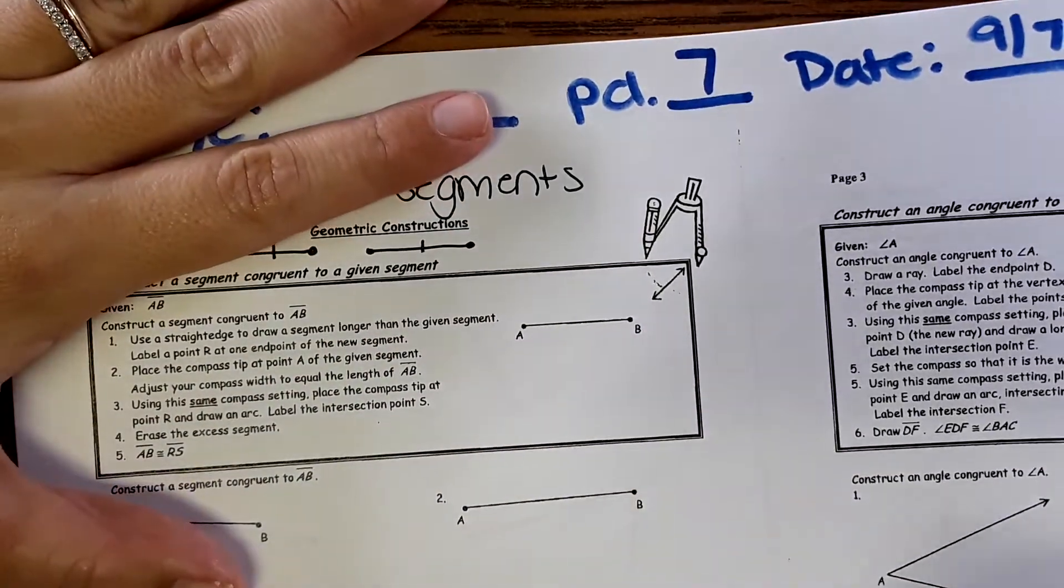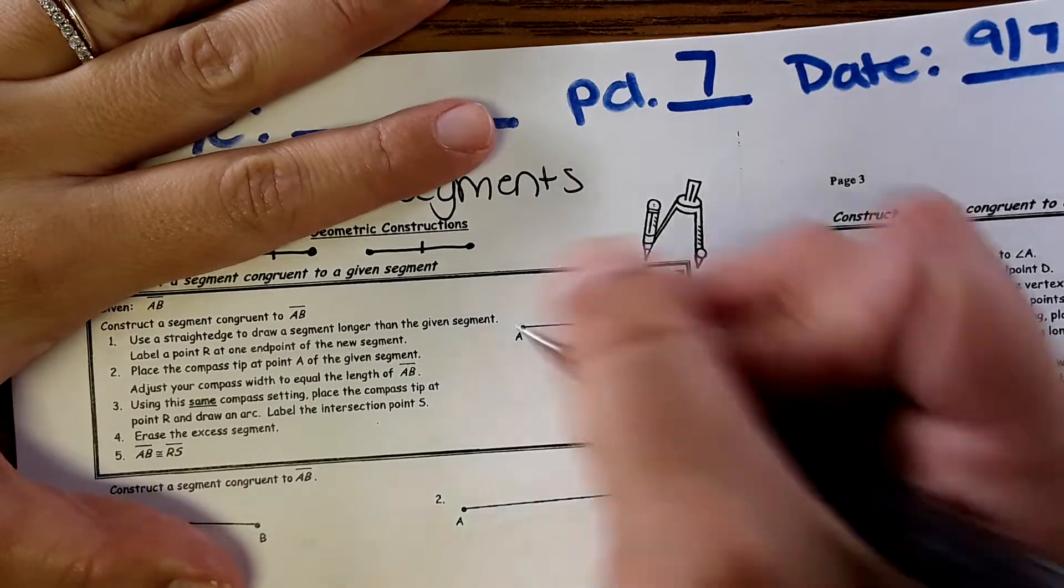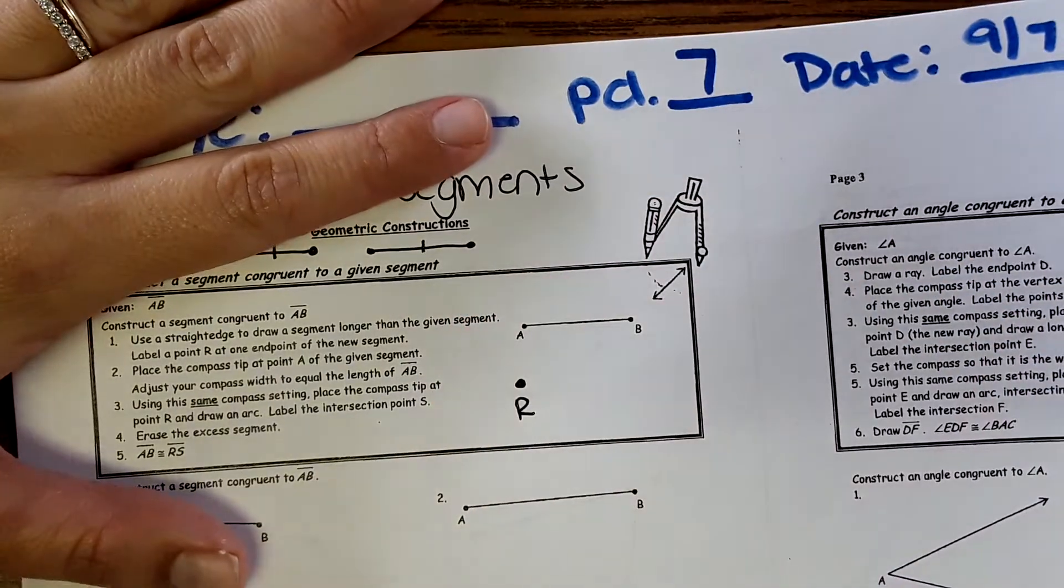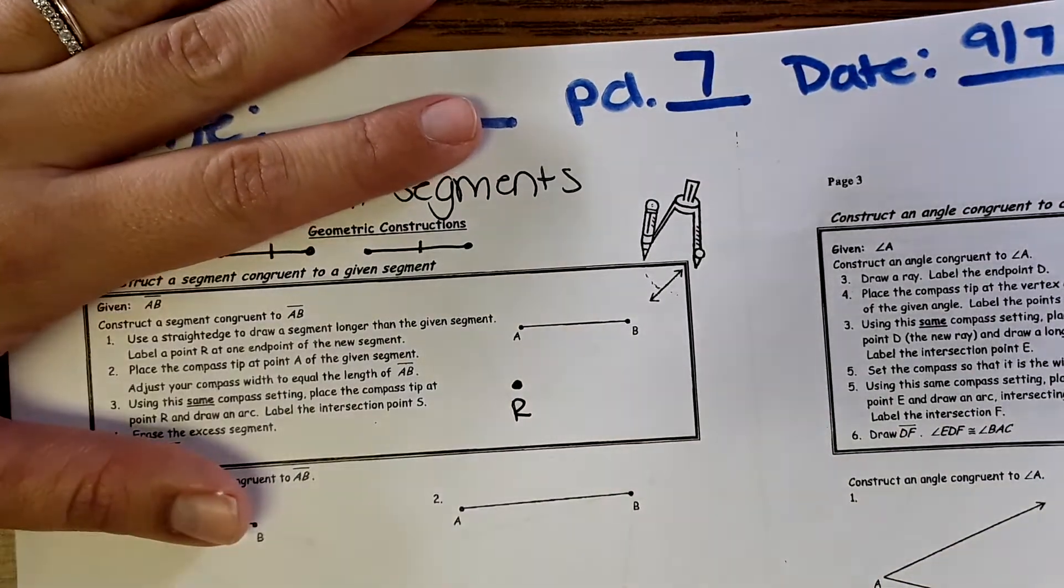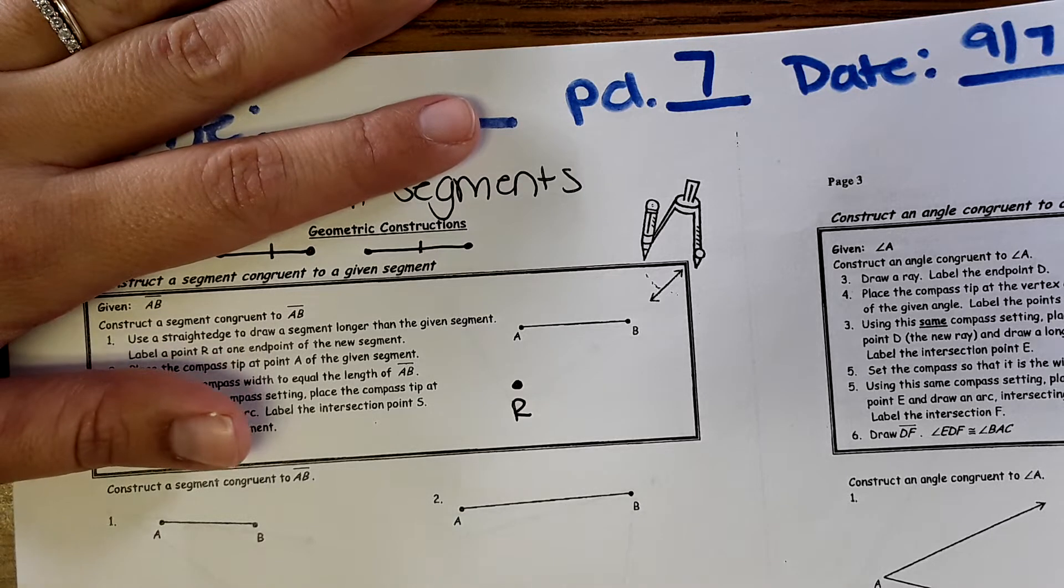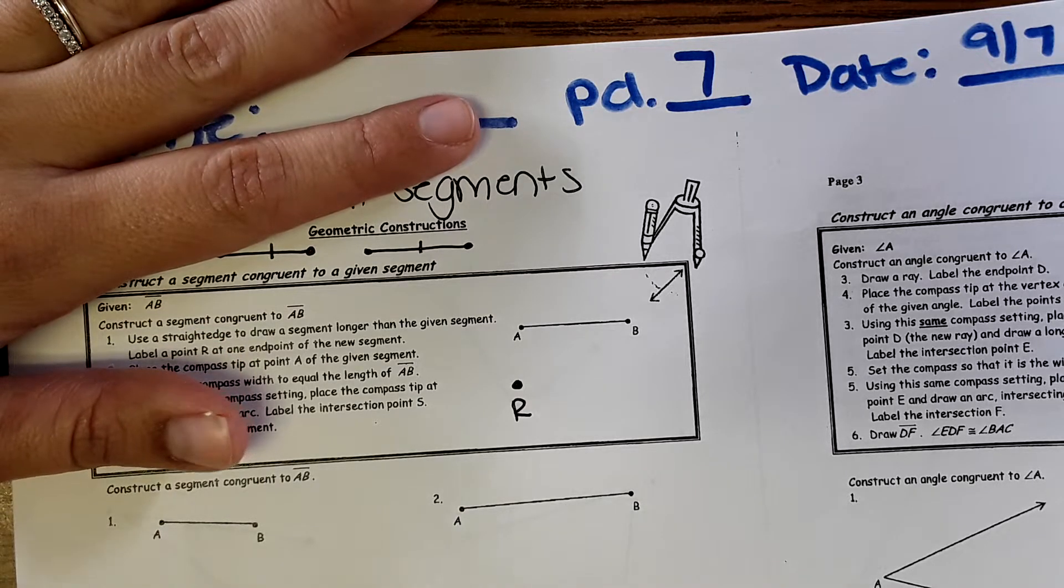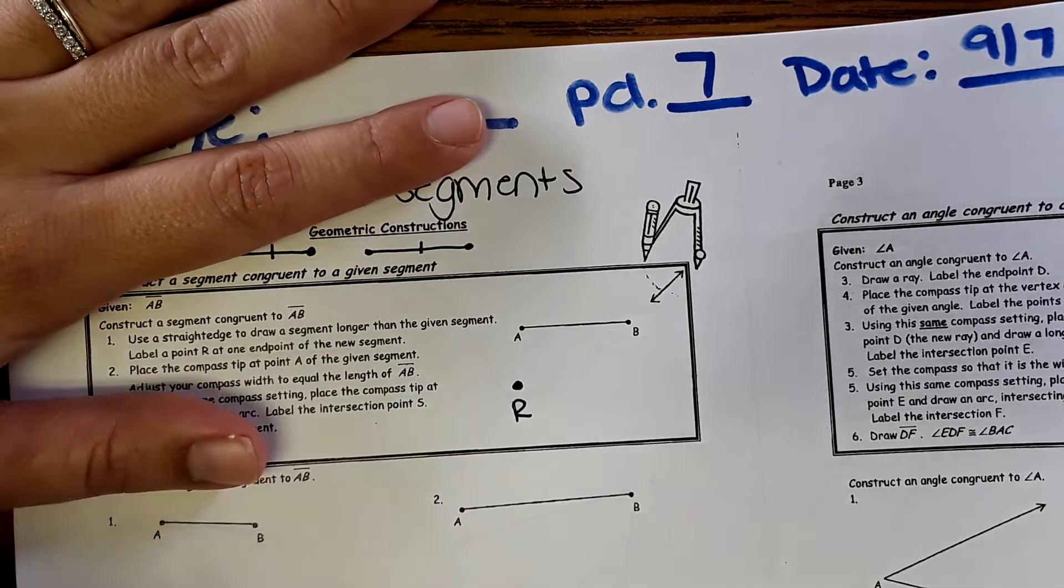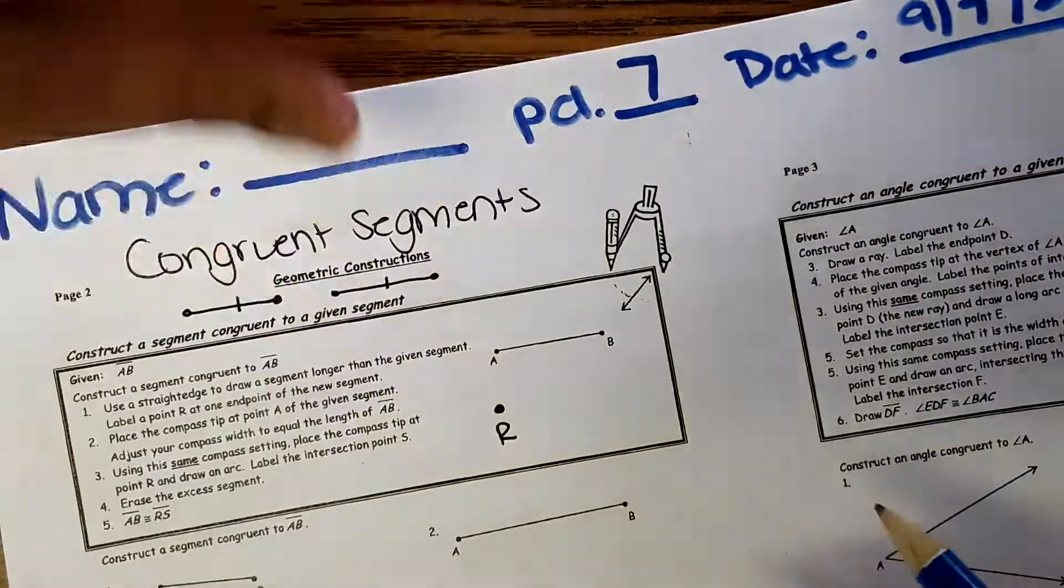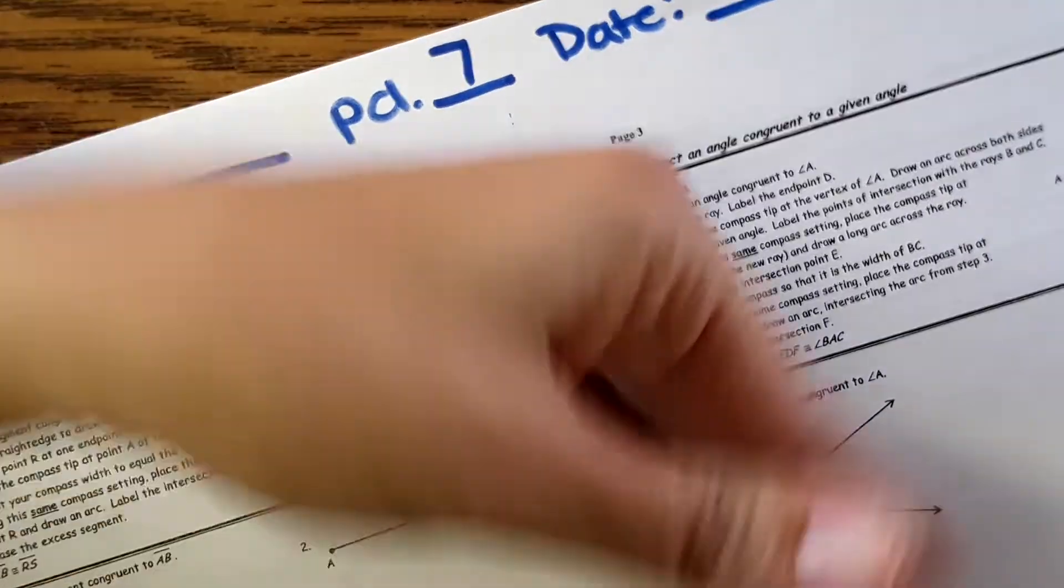We're going to draw a segment congruent to that, meaning the same exact length. First thing we need to do is label a point R, so draw point R.